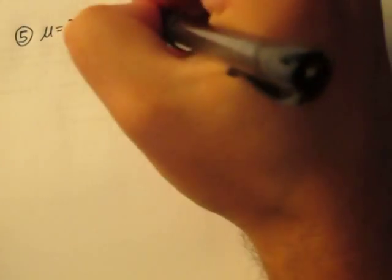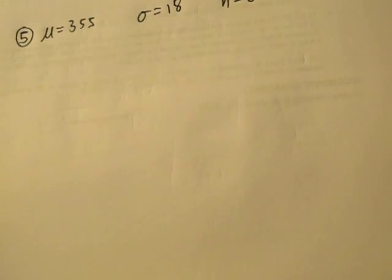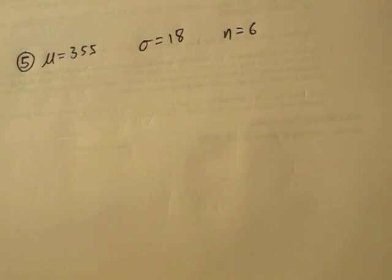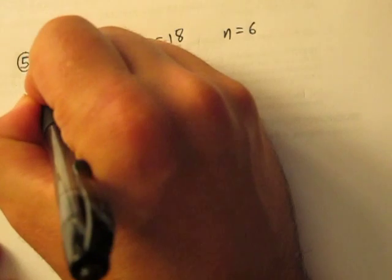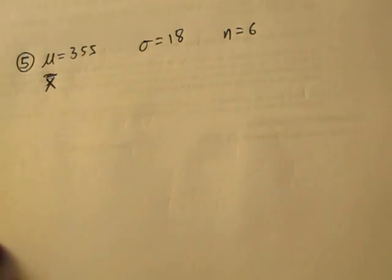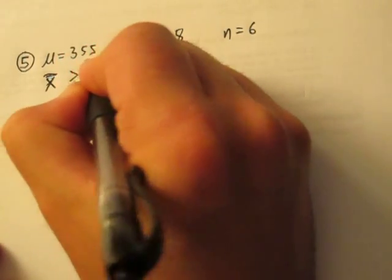Problem five is very much like problem three — it's a very standard Central Limit Theorem type problem. A can of Coca-Cola has an average volume of 355 milliliters with a standard deviation of 18 milliliters. If we take a sample of six cans, what's the probability that the sample mean is at least 355?